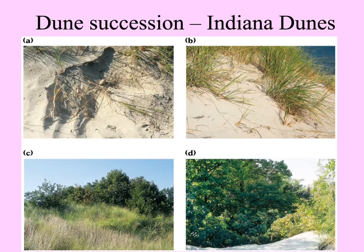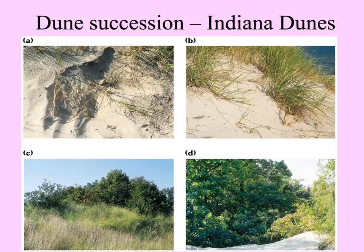Dunes succession is an example of primary succession because the new uncolonized sand has not had plants on it before. Dunes are pushed up — sand pushed up by bodies of water to the edge of the shore that move back over time. The bare sand is colonized by rhizomatous grasses first, holding it down, so that in succession shrubs colonize and eventually bigger trees.